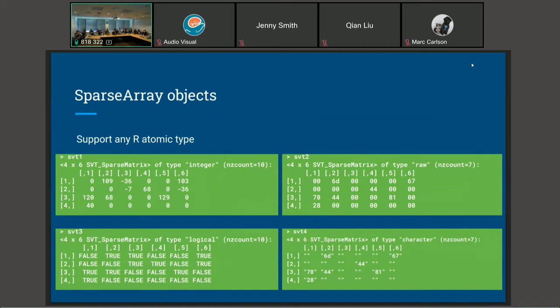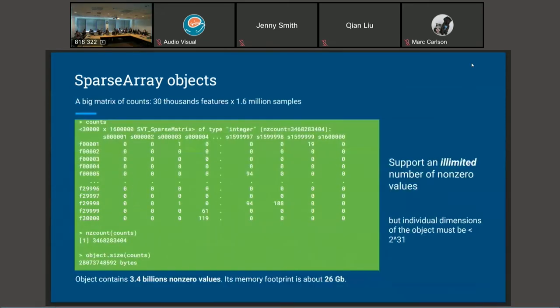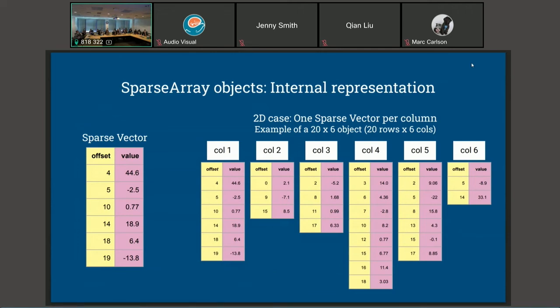It supports any type, so any R atomic type: integer, raw, logical, character. Complex is also supported. There is no limit on the number of non-zero values that you can store in the object. The limit is going to be the amount of memory that you have on your machine, but as long as you have enough memory, you should be able to store as many non-zero values as you want. Lots of non-zero values here. Of course, that is a big object, 26 gigabytes. That's the memory footprint of this object.